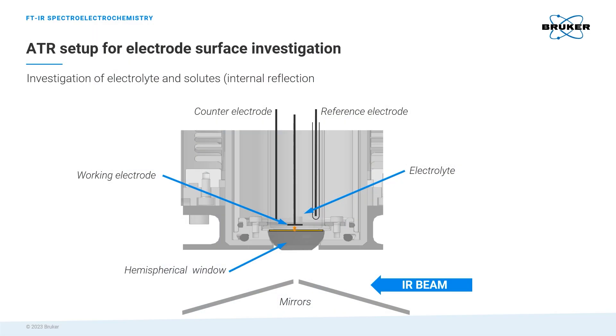Today we will show you how to perform spectroelectrochemistry using the Invenio FTIR spectrometer and our dedicated reflection accessory. The measurements in this video will be performed using attenuated total reflectance or ATR. For this purpose, electrodes are introduced into the electrolyte with the working electrode positioned in close proximity to the surface of the ATR crystal.